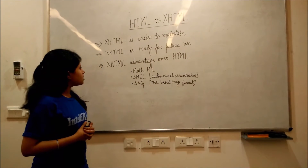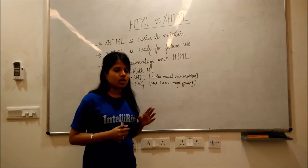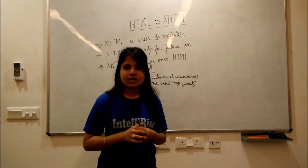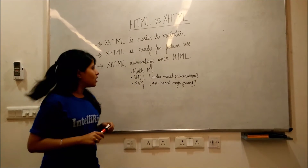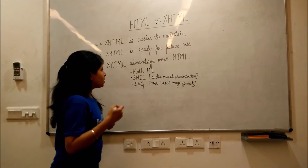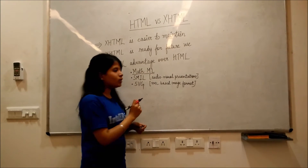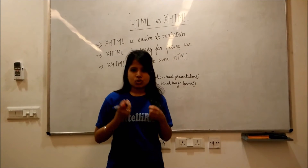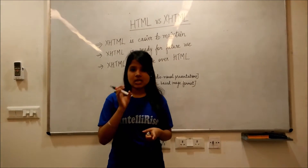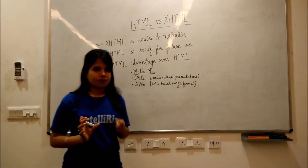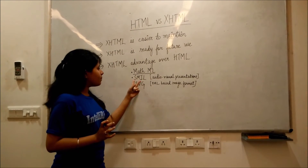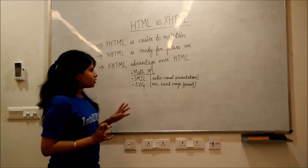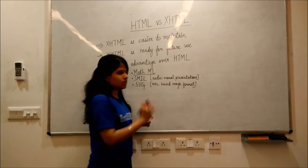The third point considers the add-on capabilities that XHTML offers beyond HTML. First is MathML, which is Mathematical Markup Language, used to show mathematical notations in XML-based applications. Second is SMIL, which is Synchronized Multimedia Interactive Language, used for audio-visual presentation.